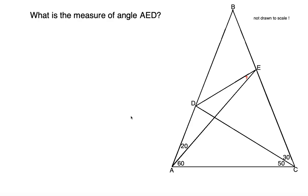In this world's hardest easy geometry problem, we're given a triangle ABC, and we're asked to find the missing angle measure, namely AED, given the information for the base angles of this triangle. Notice right away that the base angles in this triangle are both 80 degrees.